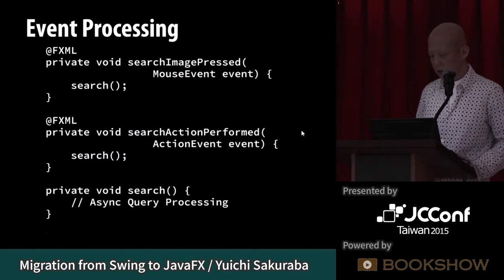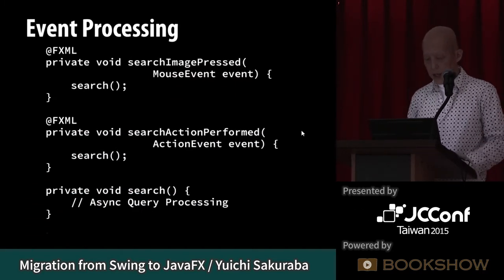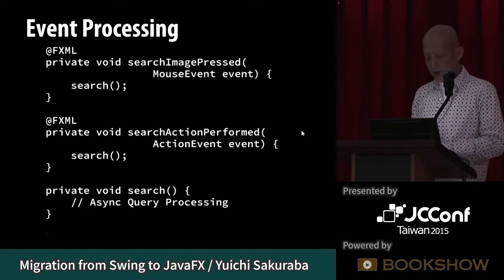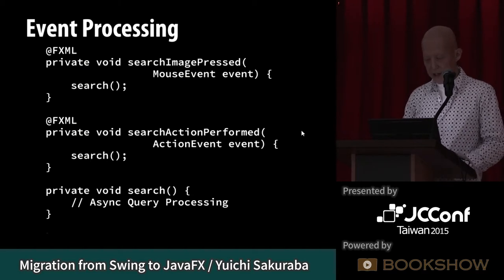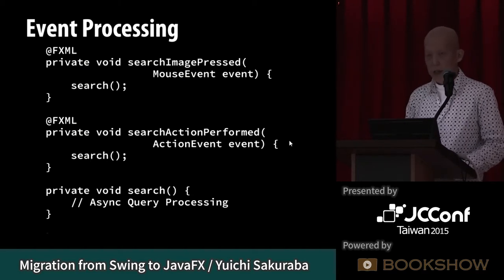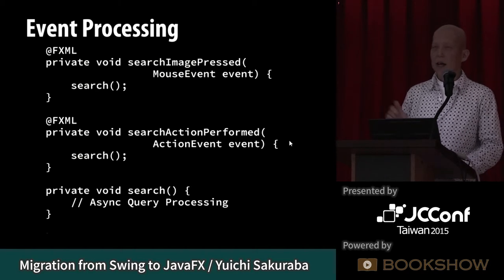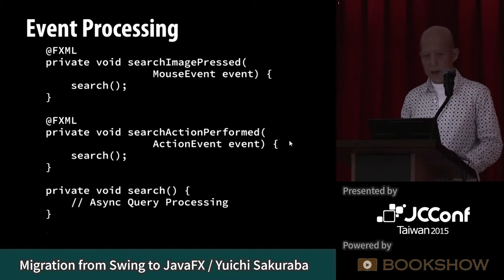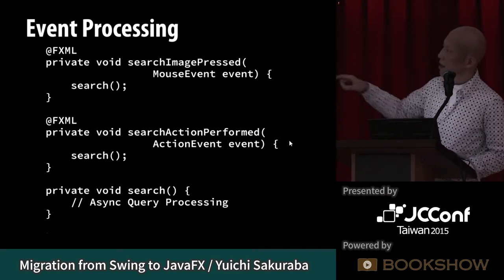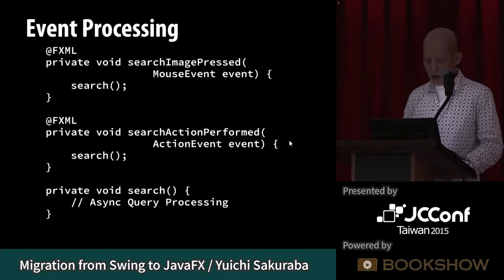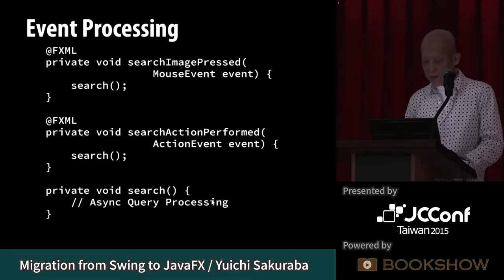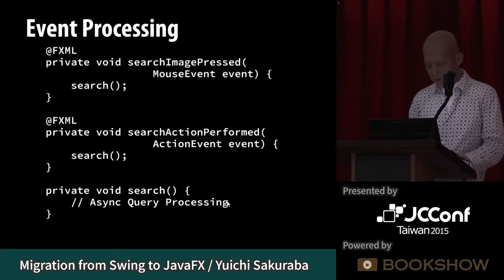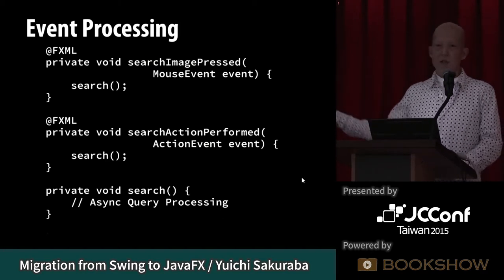For event processing, the first handler creates and places the search image. The second handles pressing Enter in the text field. Both methods call the search method. The search method uses asynchronous tasks, which I'll discuss later.